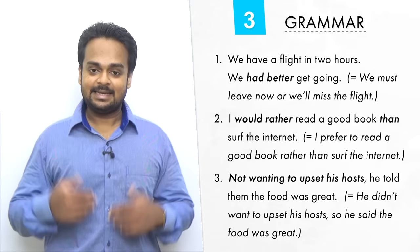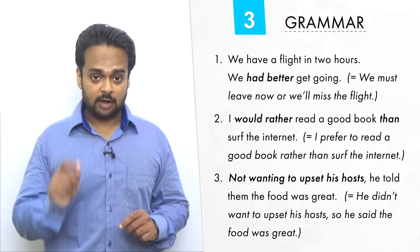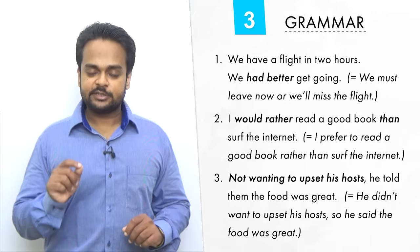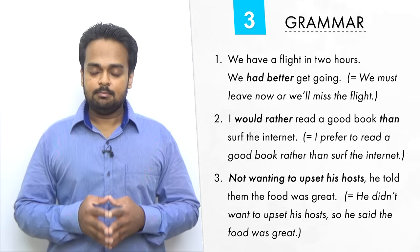One last example. Not wanting to upset his hosts, he told them the food was great. It means he did not want to upset his hosts, so he told them the food was great. But that means the food was not great and he chose not to tell the truth because he didn't want to hurt the feelings of the hosts. Here, not wanting to upset his hosts is a participle clause and it's often used to present a reason-result combination.